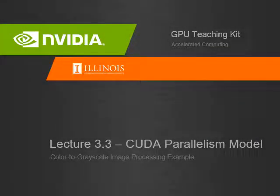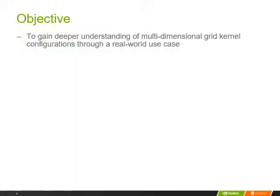Hello everyone. Welcome to lecture 3.3. We're going to use a color to grayscale image processing example to illustrate the CUDA parallelism model. The objective of this lecture is for students to gain deeper understanding of multi-dimensional grid kernel configurations through a real-world use case.